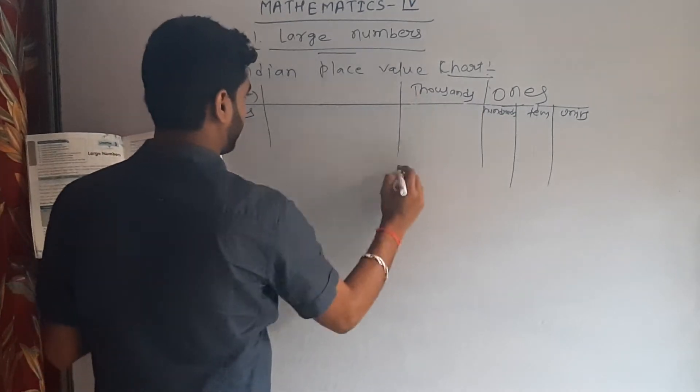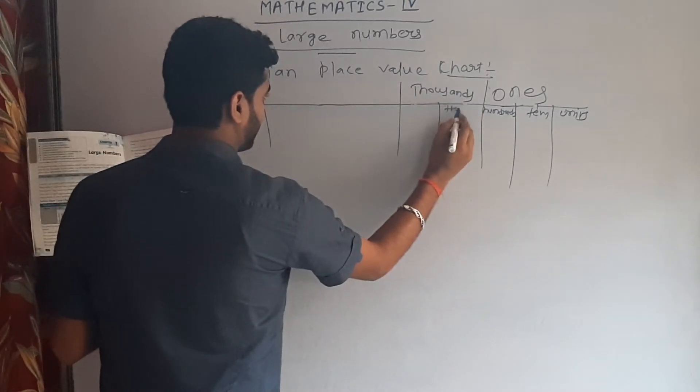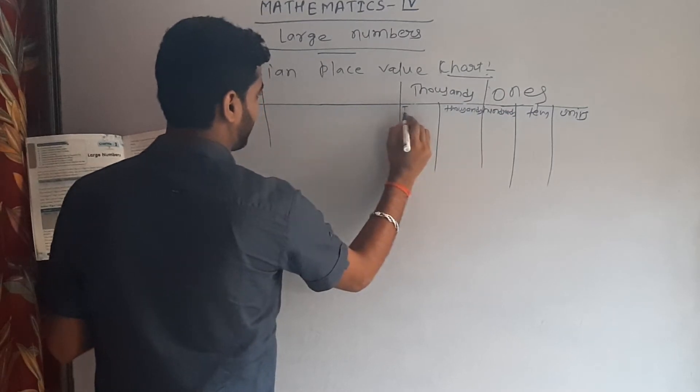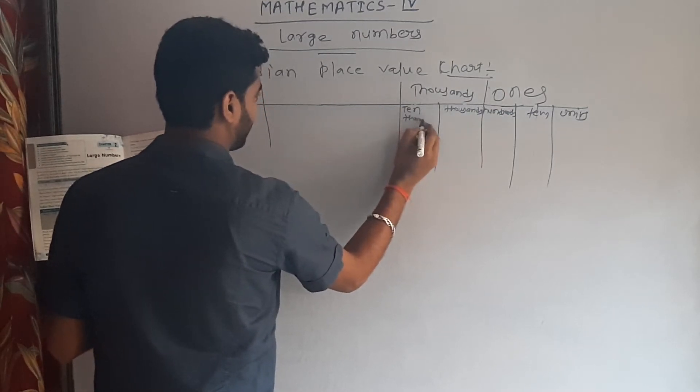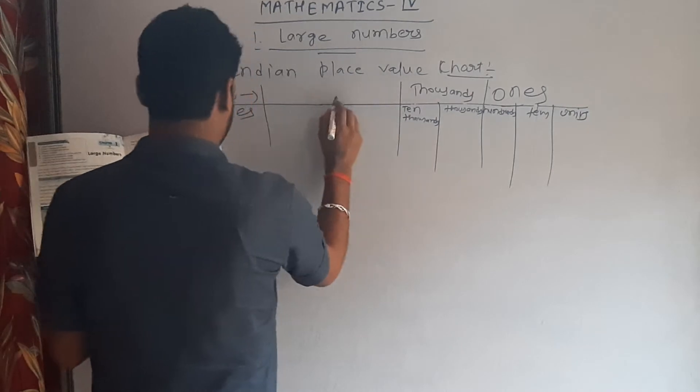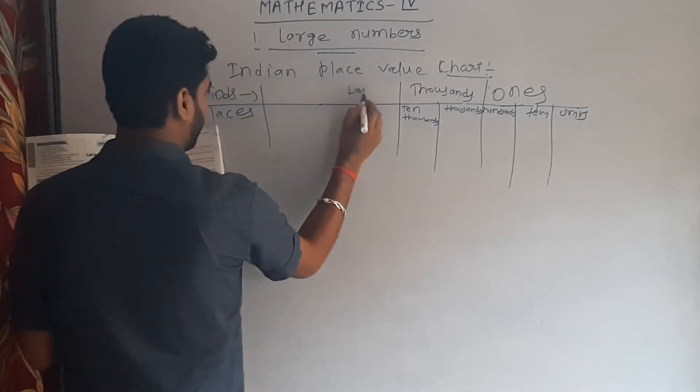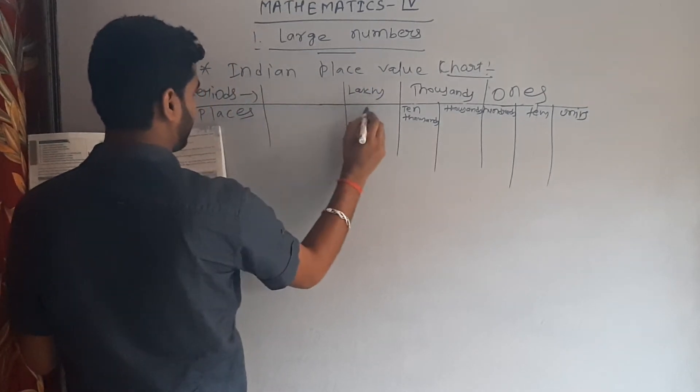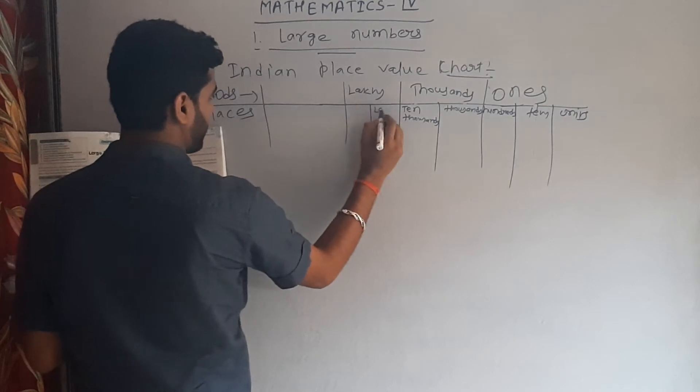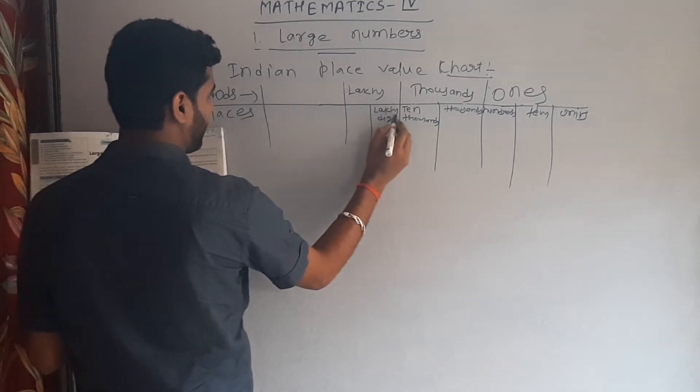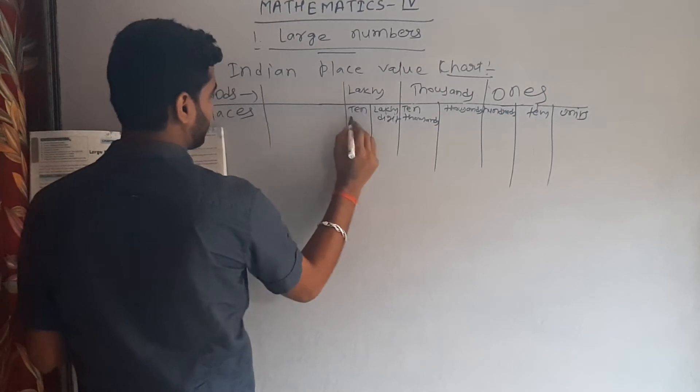In thousand period, there comes thousand digit and ten thousand digit. In lakh period, there comes lakh and ten lakh digit.